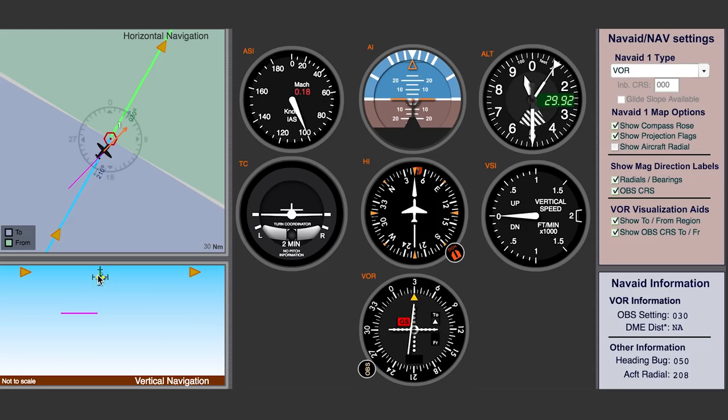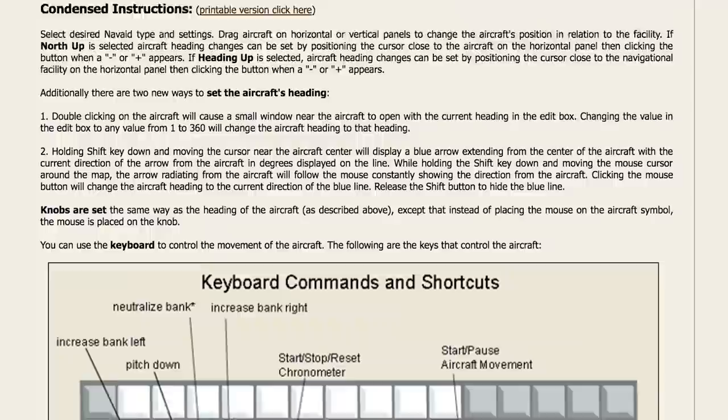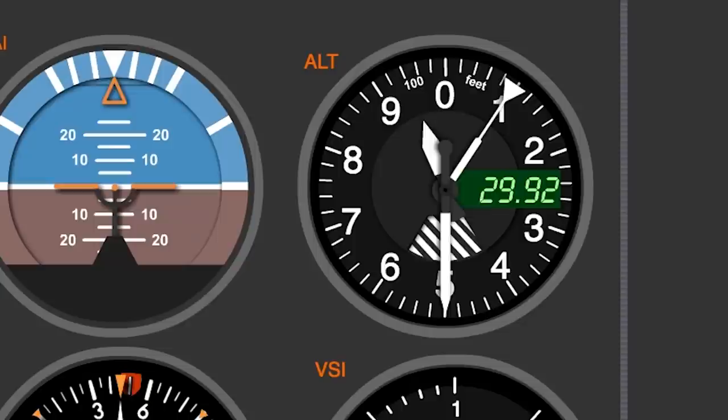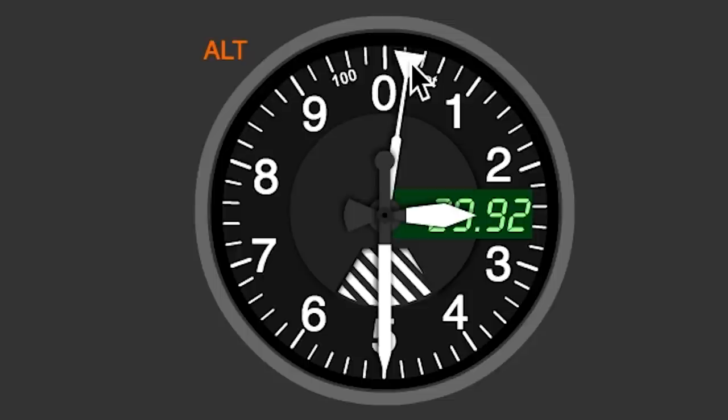One of the most common navigational aids is Very High Frequency Omnidirectional Range, or VOR. Down here you're shown different features of the simulation. If you adjust vertical navigation, you'll see horizontal navigation change accordingly. When you set it higher or lower, you'll also see the altimeter change.